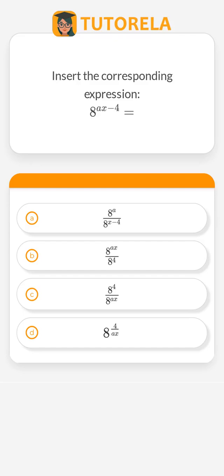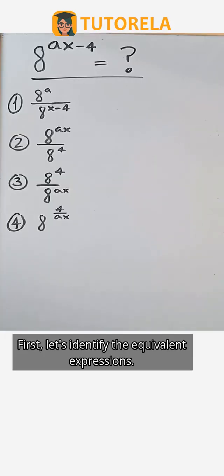Insert the corresponding expression: 8 raised to the power of the quantity a times x minus 4 equals. First, let's identify the equivalent expressions.